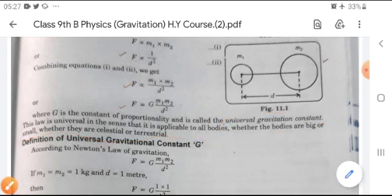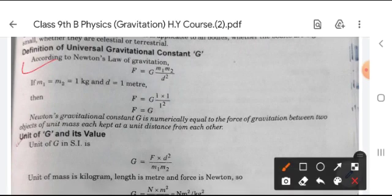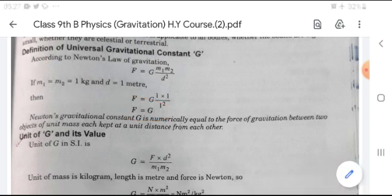Definition of universal gravitational constant, that is capital G. According to Newton's law of gravitation, F equals G m1 m2 by d square. If m1 and m2 equal 1 kg and d equals 1 meter, then the value of F becomes G. Newton's gravitational constant G is numerically equal to the force of gravitation between two objects of unit mass each, kept at a unit distance from each other.